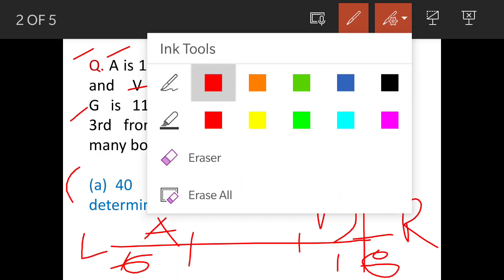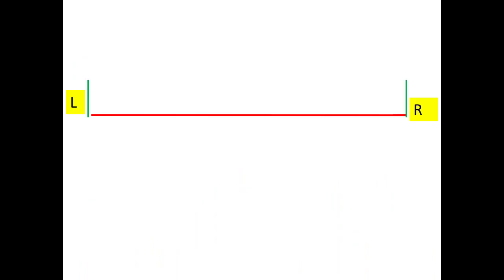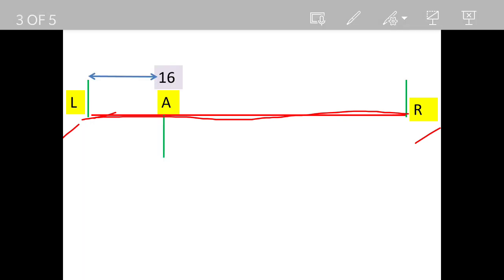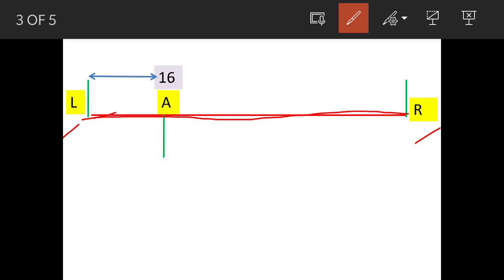Now this is the left side, this is the right side, and this is the row, this red line. Now A is 16th from the left side, so that means before A there are 15 people.